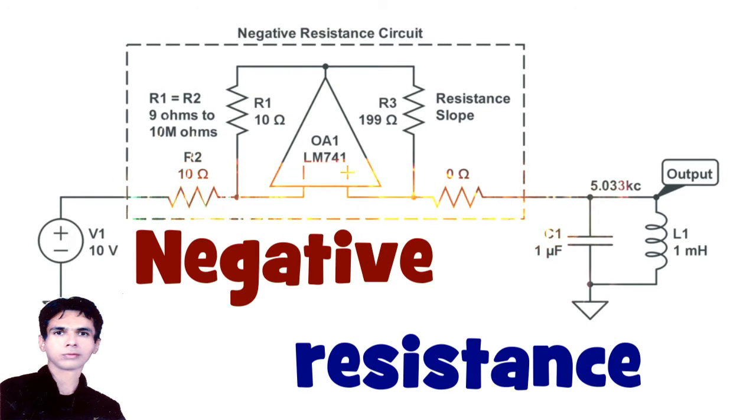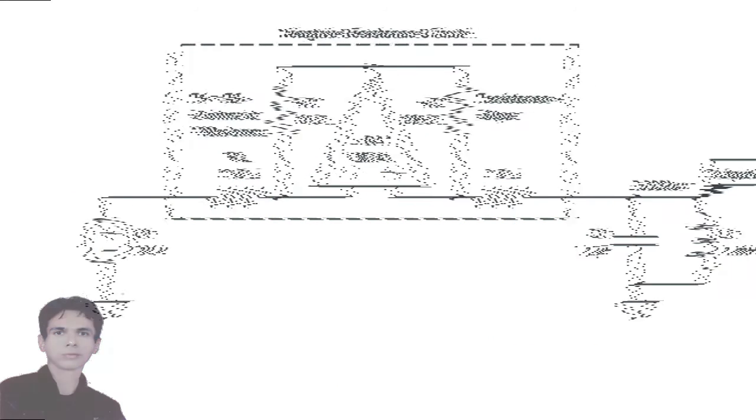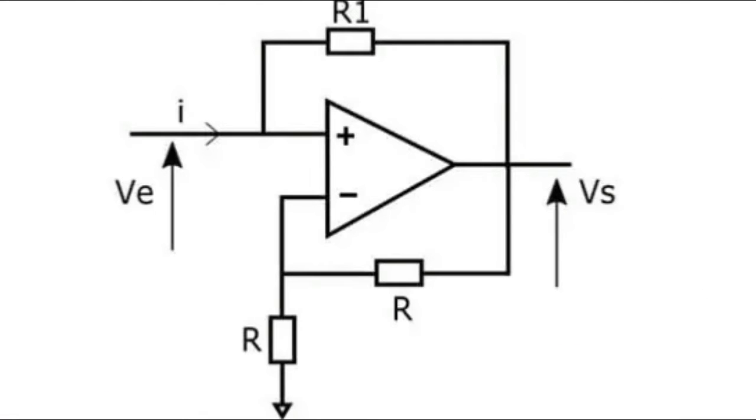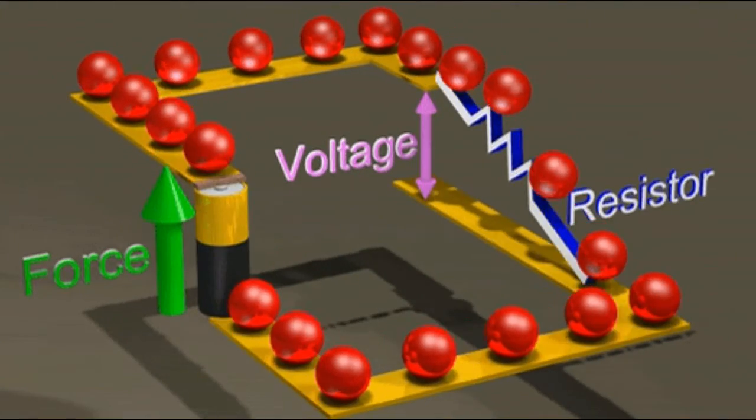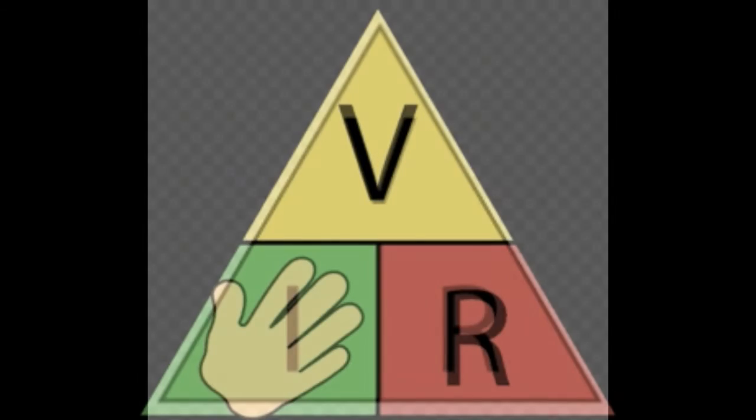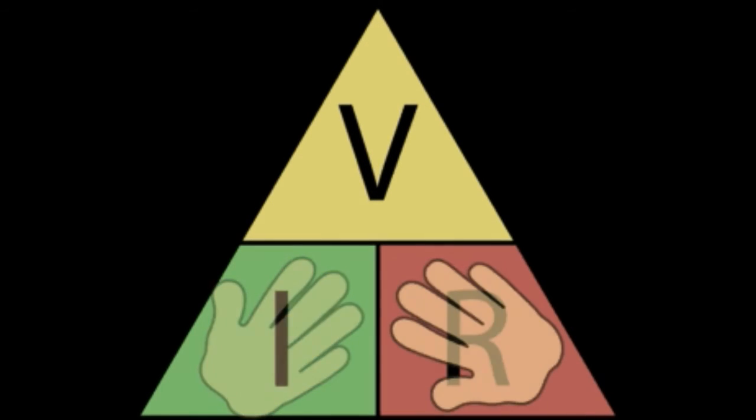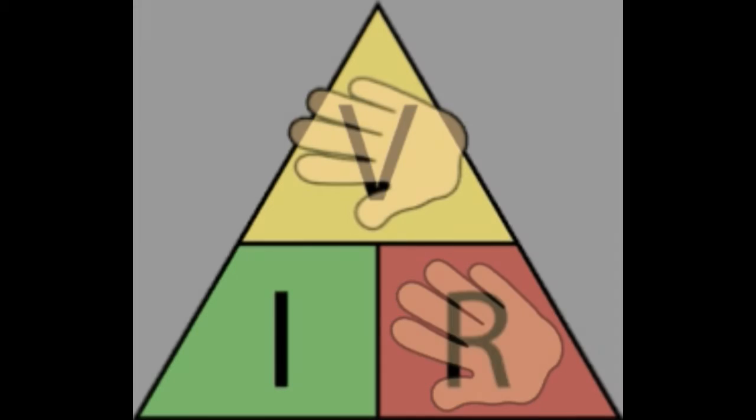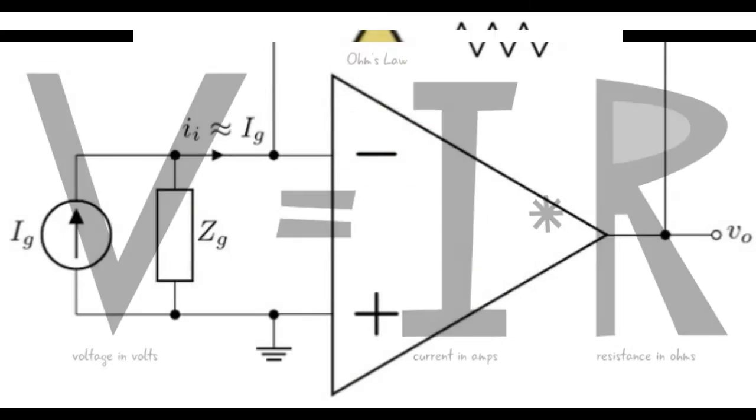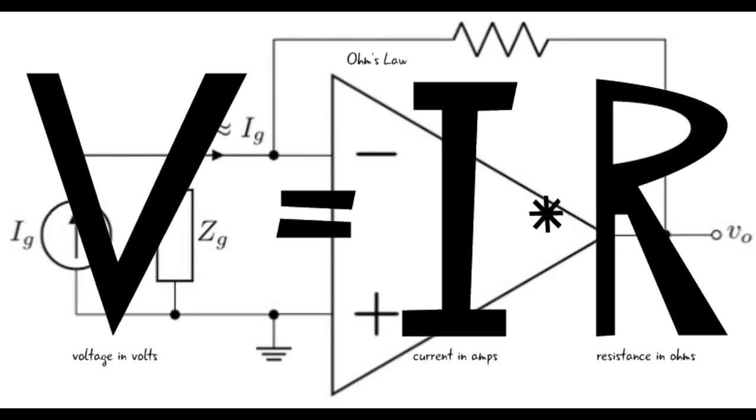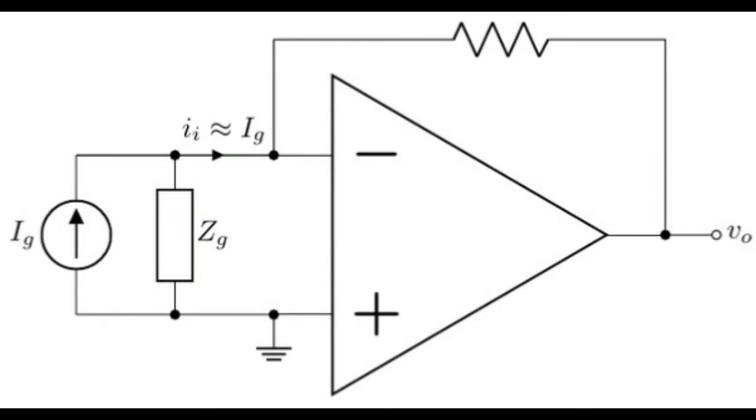10. Negative resistance. This circuit applies Ohm's law with the basic formula, voltage equals resistance times current. Resistance is in Ohms and is always positive. But thanks to operational amplifiers, a negative resistor can be designed.